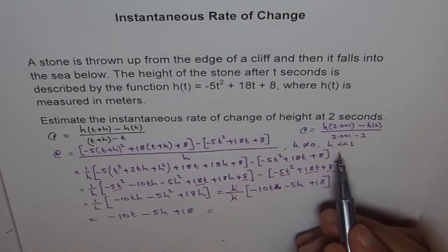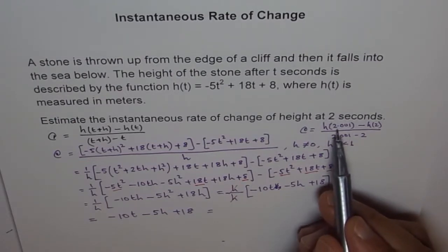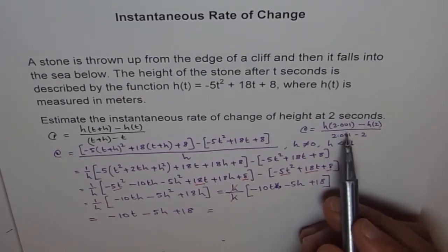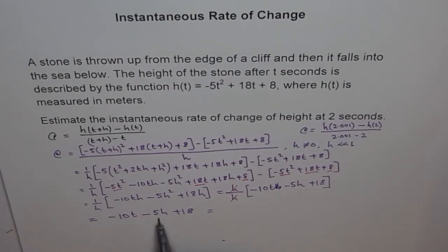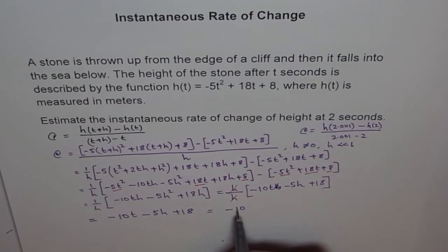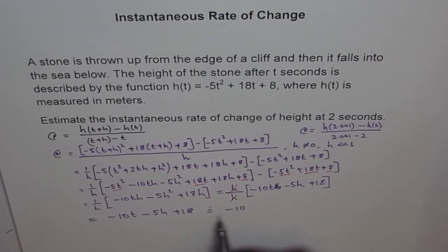Now, if h is very, very small as compared to 1, for example, like this, 0.0001 like this, then, this is a negligible term. And therefore, I can write this as -10t. Let me write approximately because I have done some approximation here. +18, or 10t.